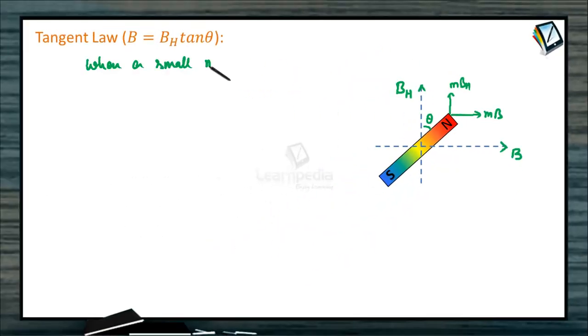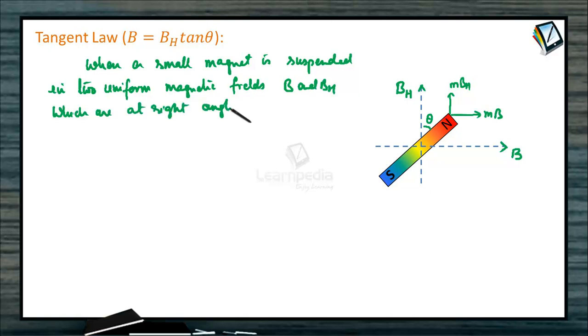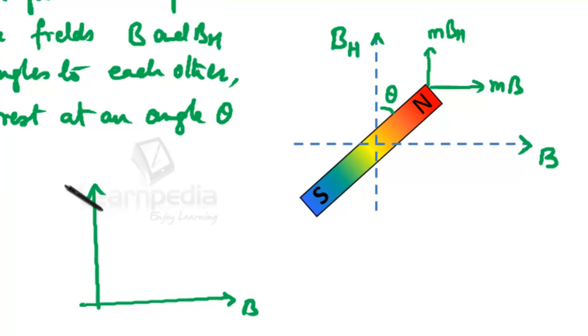When a small magnet is suspended in two uniform magnetic fields B and BH, which are at right angles to each other, the magnet comes to rest at an angle theta. This magnetic field is B, this magnetic field is BH. This is the bar magnet. It comes to rest at an angle theta.